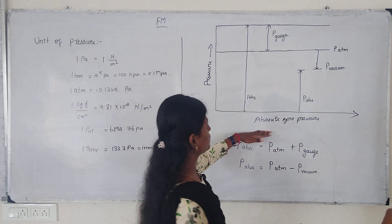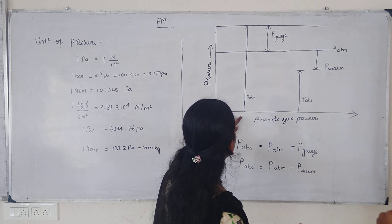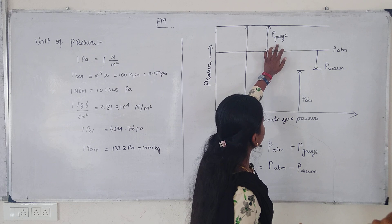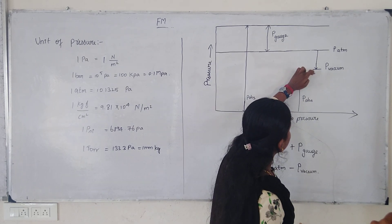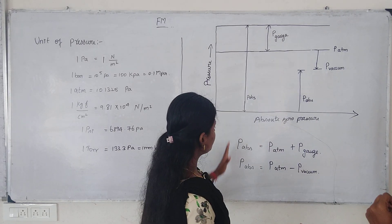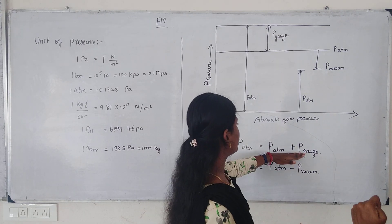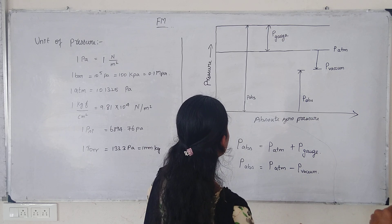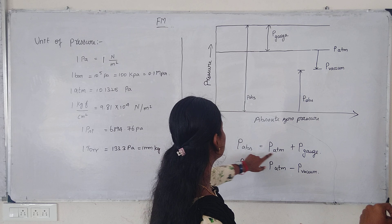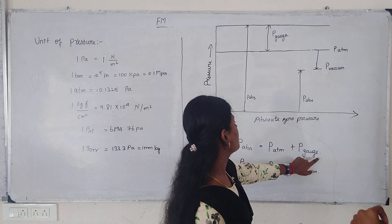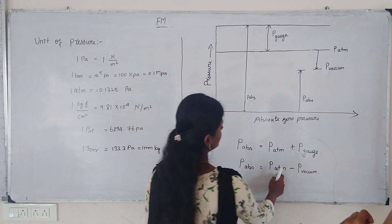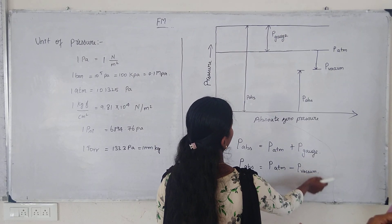Next, the graph between pressure and absolute pressure. On the graph, absolute pressure and gauge pressure are marked at certain points, and vacuum pressure and atmospheric pressure are also indicated. There are two formulas: absolute pressure equals atmospheric pressure plus gauge pressure, and absolute pressure equals atmospheric pressure minus vacuum pressure.